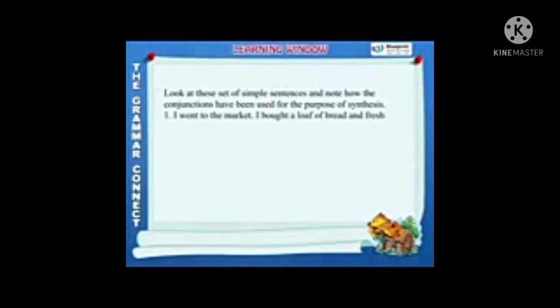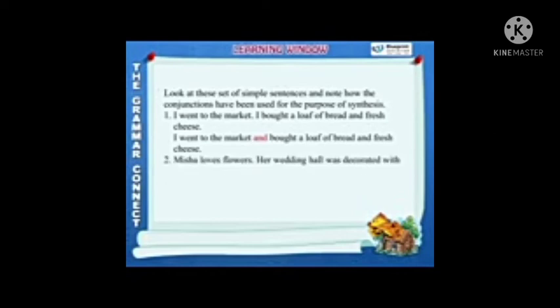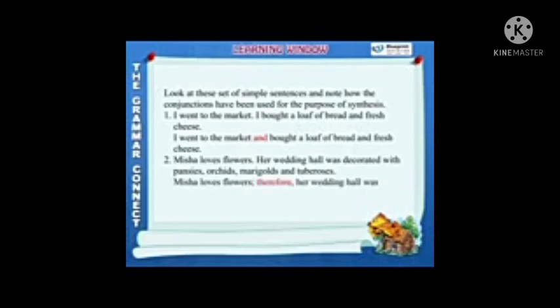Example one: 'I went to the market. I bought a loaf of bread and fresh cheese.' Combined: 'I went to the market and bought a loaf of bread and fresh cheese.' Example two: 'Michelle loves flowers. Her wedding hall was decorated with pansies, orchids, marigolds, and tuberoses.' Combined: 'Michelle loves flowers; therefore, her wedding hall was decorated with pansies, orchids, marigolds, and tuberoses.'